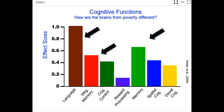Another thing to consider when deciding which cognitive skills to build: if you ask how students differ based on socioeconomic status, on the far left you see a really tall bar. We're looking at differences between middle class students and those from poverty. The bigger the bar, the bigger the effect size. Notice where the arrows are pointing — the biggest effect sizes are in brain areas of language and memory.